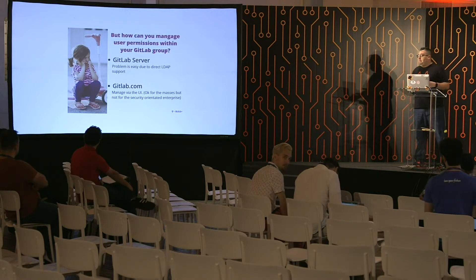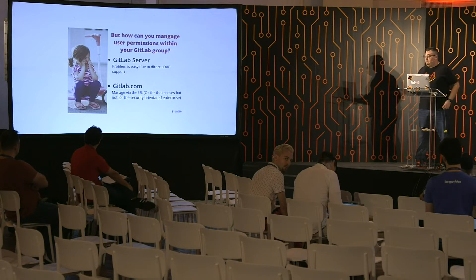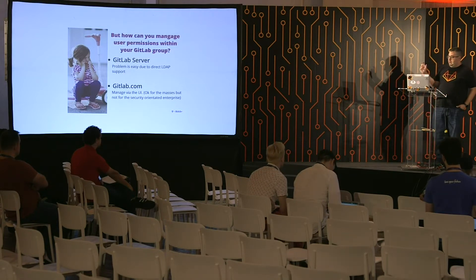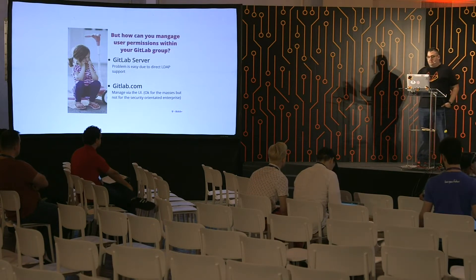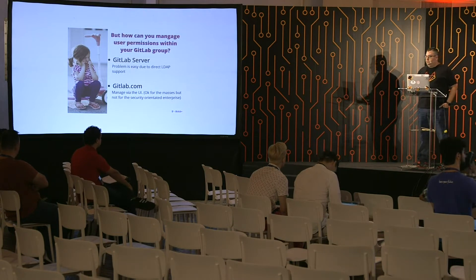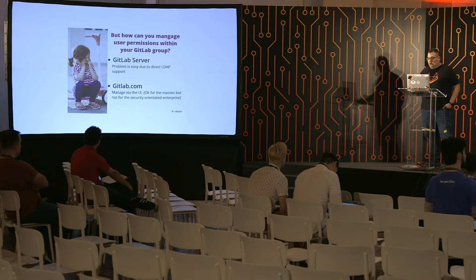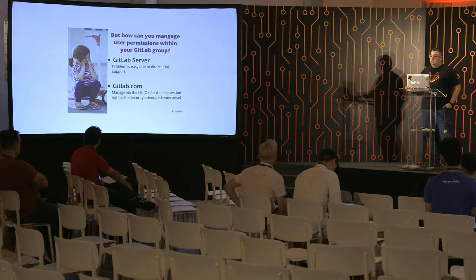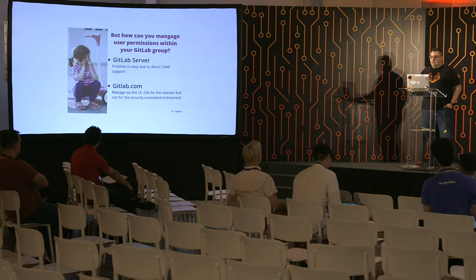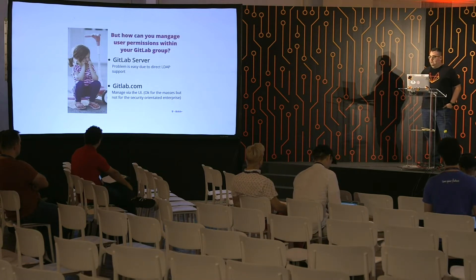There are a couple of nuances that are different with this. You have issues where you can't manage groups. With GitLab server, when you're using Active Directory, you're able to identify Active Directory groups that map to GitLab groups — your users automatically get joined to the groups with appropriate access. With GitLab.com, you're forced into using the API or the UI.